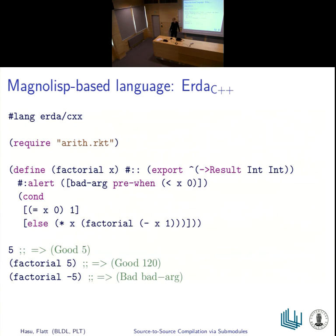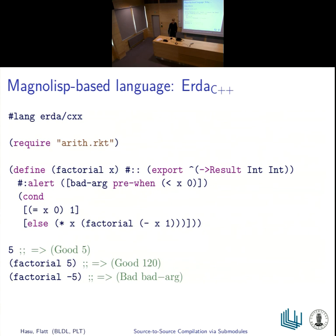Since we have this compiler for Magnolisp, we can reuse it with other languages. We did this with a research language called ERDA. This language is for researching error handling — it has some interesting good-and-bad-value semantics that are different even though it looks a lot like Magnolisp. But by inserting the expected kind of submodule as part of the macro expansion of this language, we end up with something fully compatible with the Magnolisp compiler. We can use it unmodified with this language.